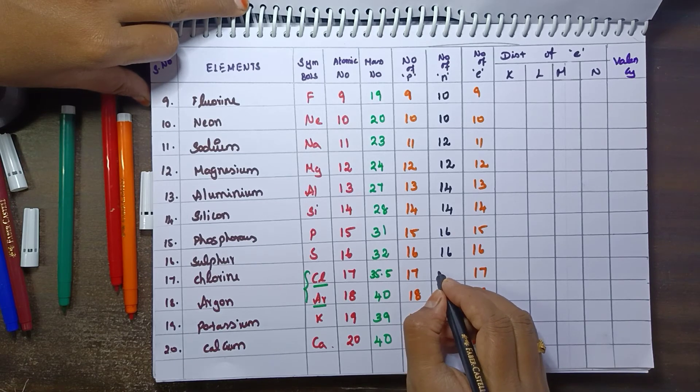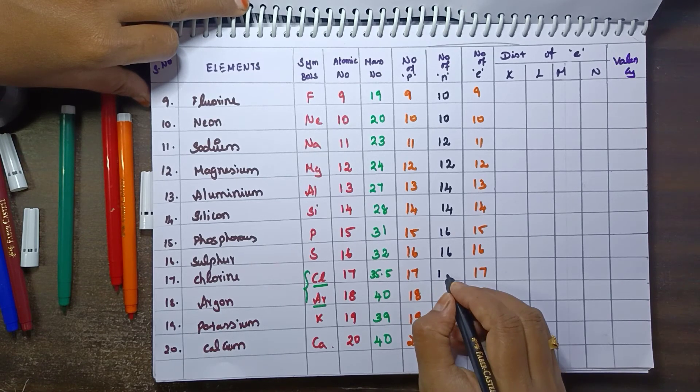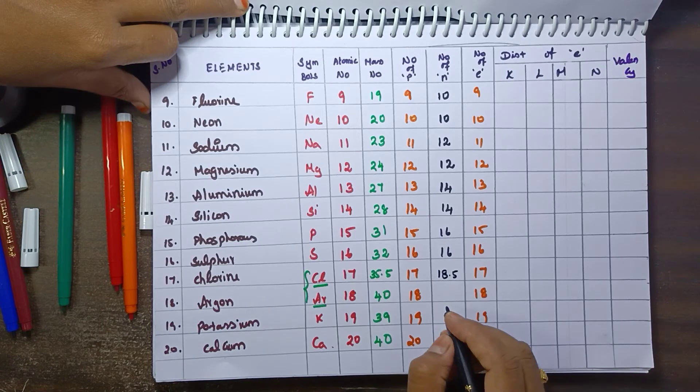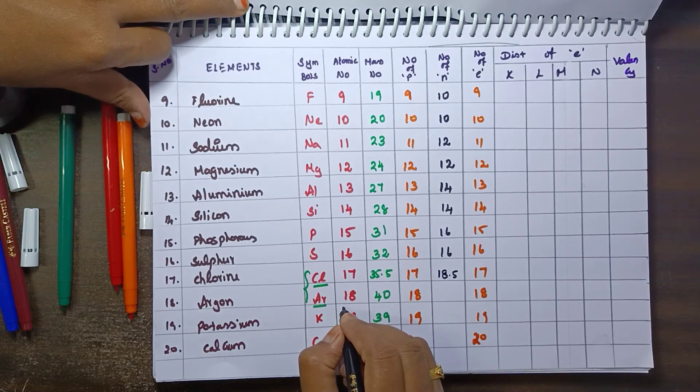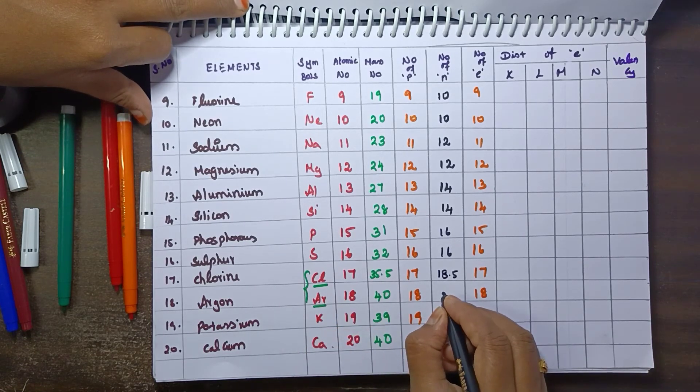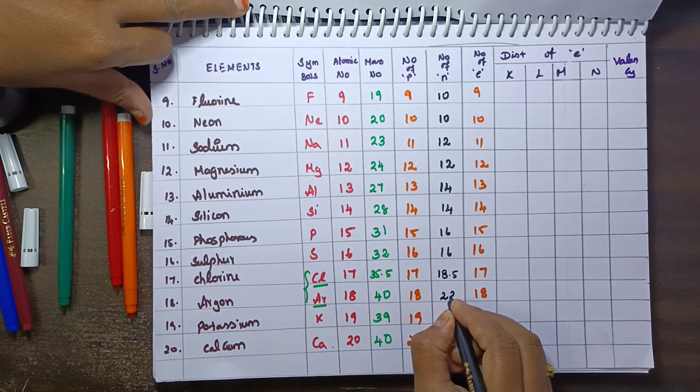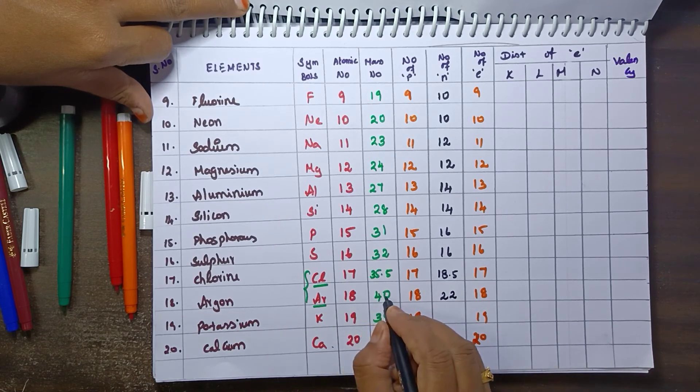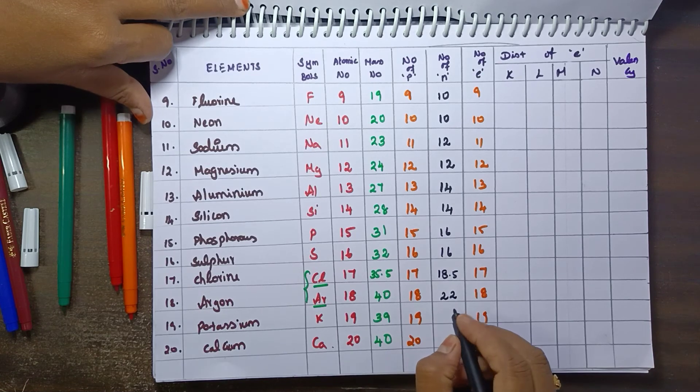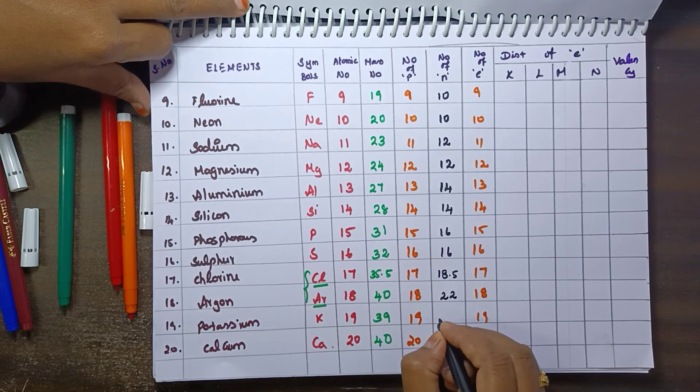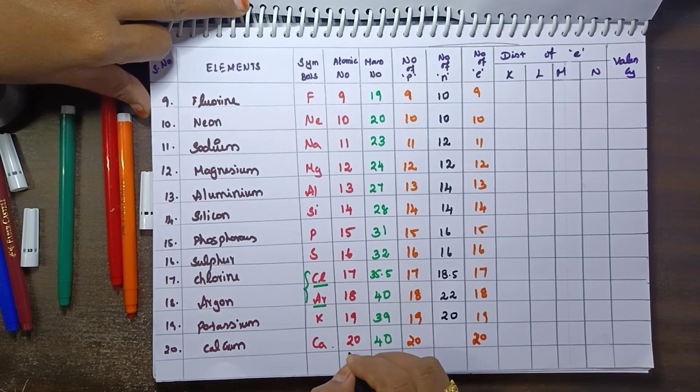So 35 minus 17, about 18. So 40 minus 18 equals 22, correct. Okay, so 39 minus 19 equals 20, and then 40 minus 20 equals 20. Now we have a number of neutrons. It is very easy.